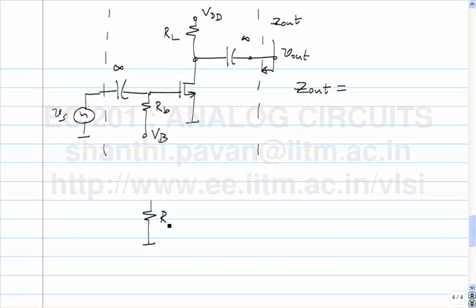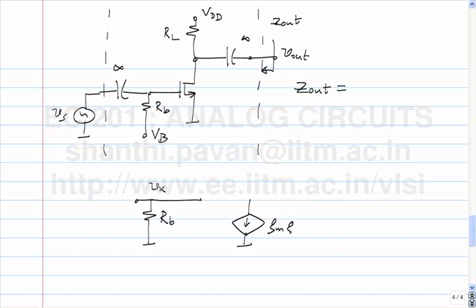In the incremental equivalent circuit, we have Rb, and assuming an ideal transistor, gm times the incremental voltage here, then Rl. This is Vout and this is Vs.